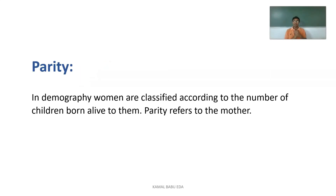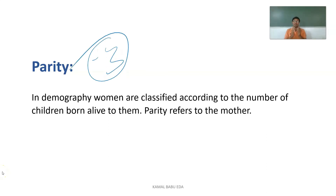Parity: in demography, women are classified according to the number of children born alive to them. For example, a mother with three children has a parity of three. In obstetrics (OBG), parity considers how many children are alive, how many live births occurred, how many abortions occurred previously, and the number of current pregnancies — recorded as an obstetric score.